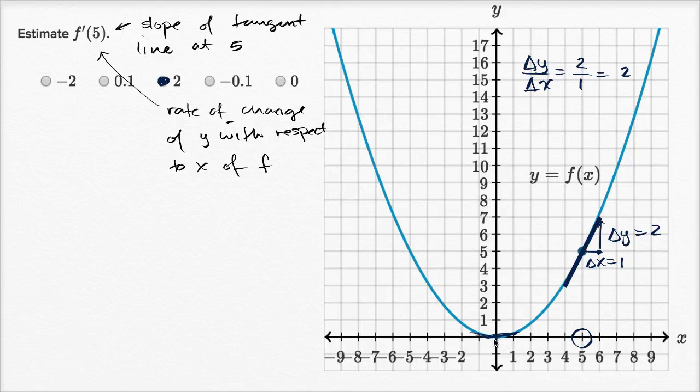A slope of zero, that would be right over here at the bottom where right at that moment, as we change x, y is not increasing or decreasing. The slope of the tangent line right at that bottom point would have a slope of zero. So I feel really good about that response.